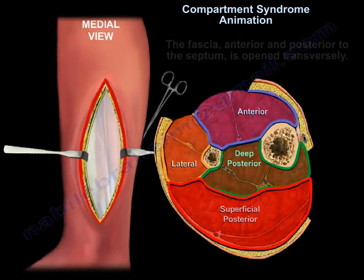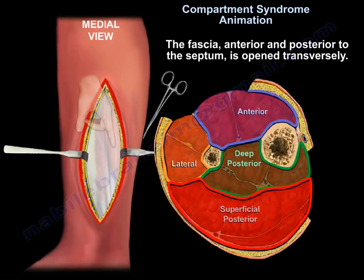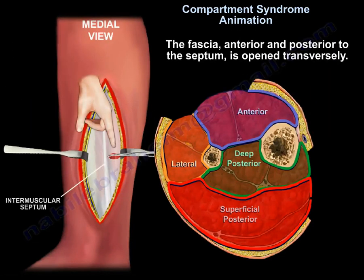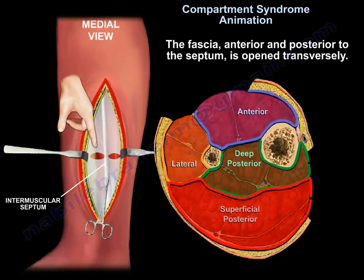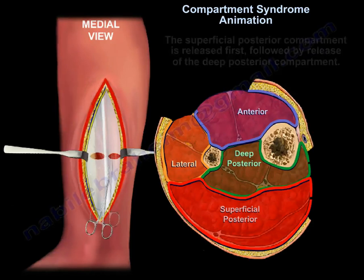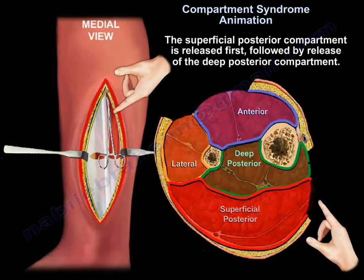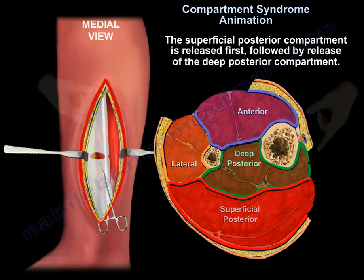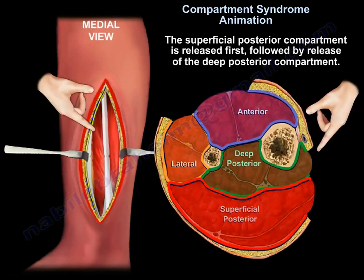The fascia, anterior and posterior to the septum, is opened transversely. The superficial posterior compartment is released first, followed by release of the deep posterior compartment.